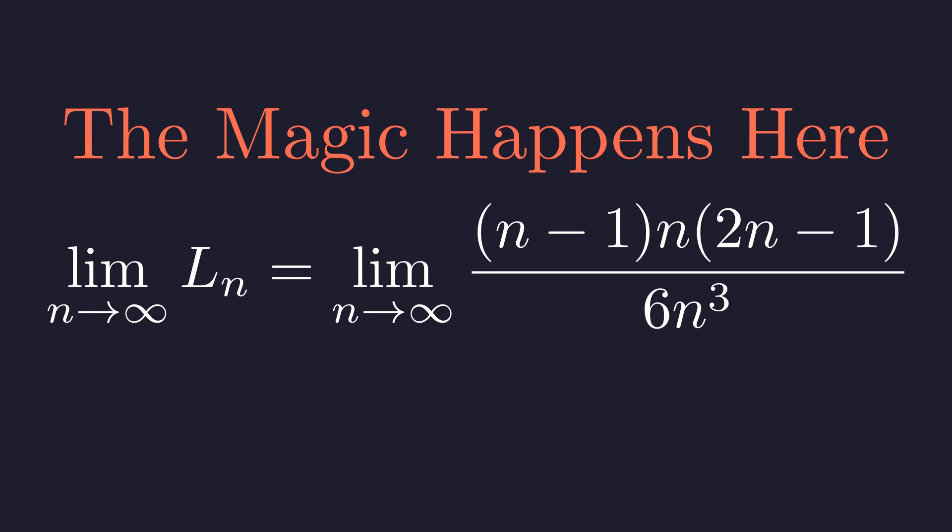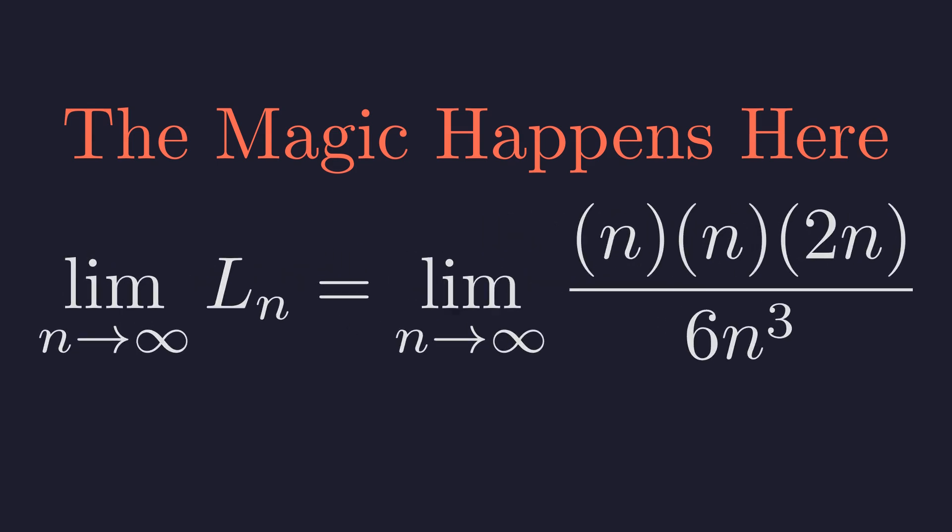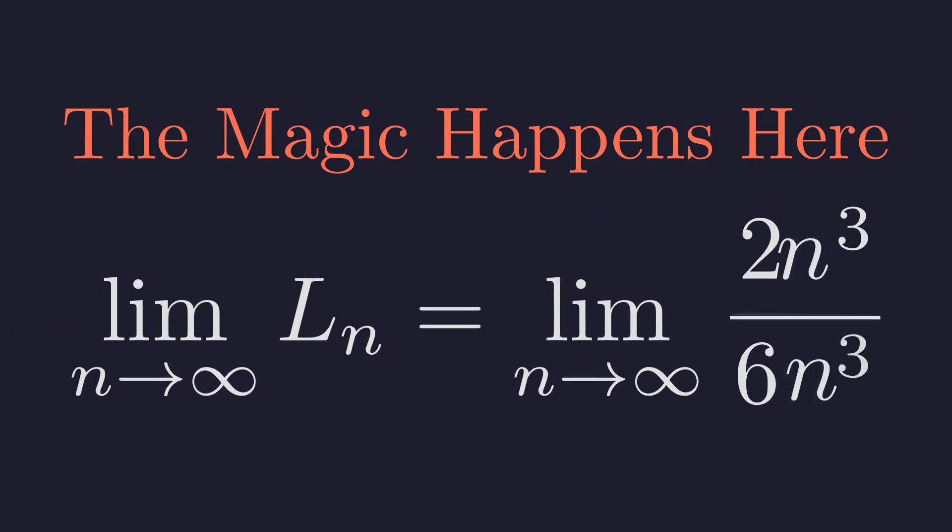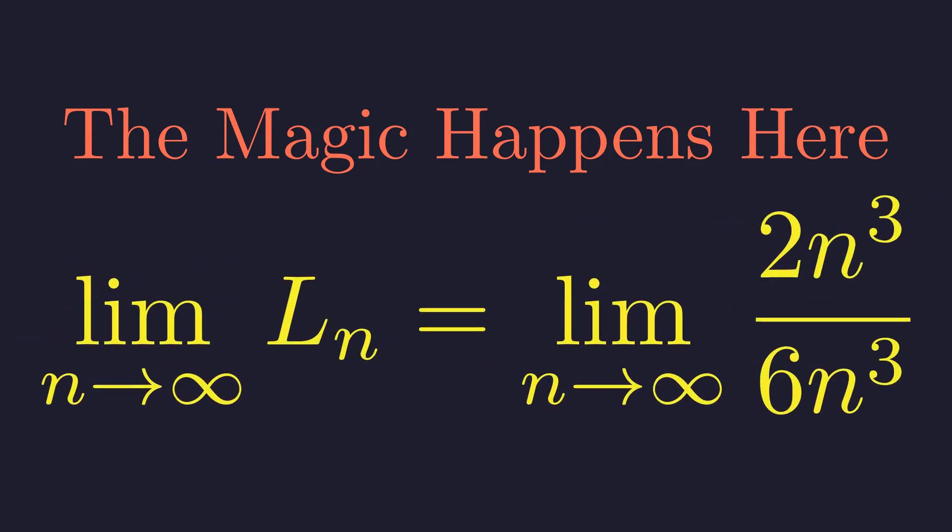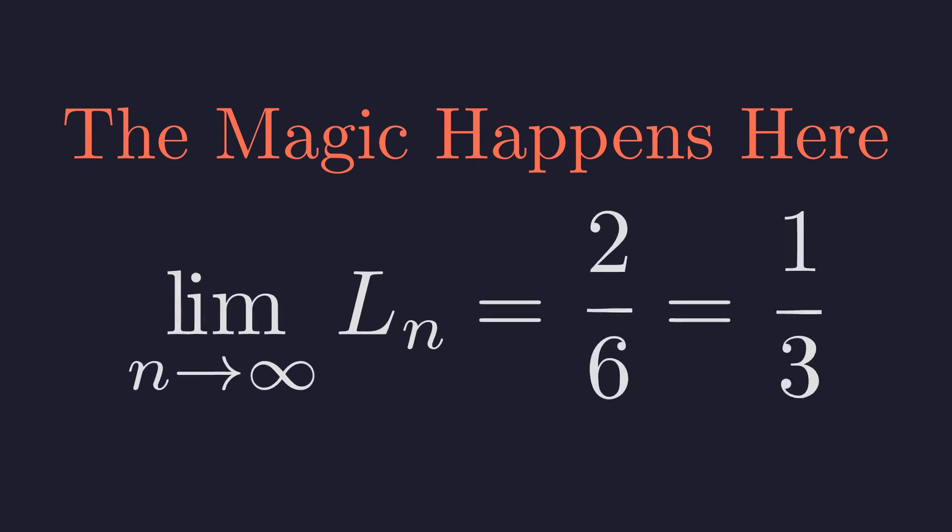Just n, n, and 2n. n times n times 2n. That's 2n cubed. 2n cubed over 6n cubed. The n cubed cancels. 2 over 6. One third.